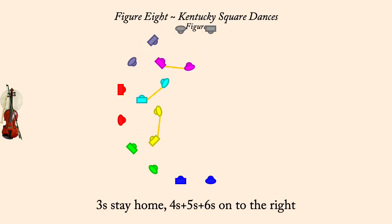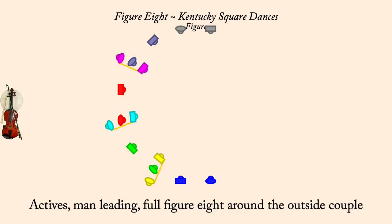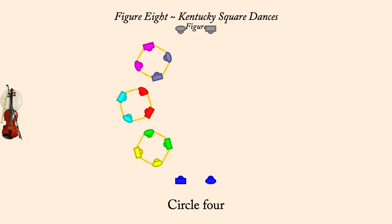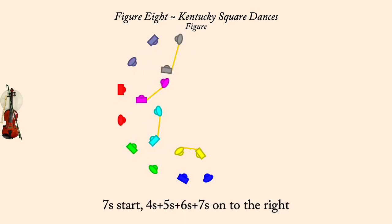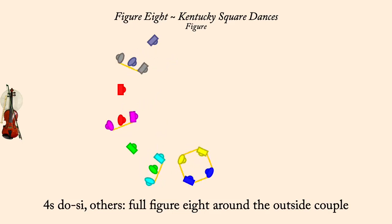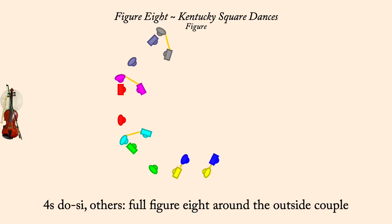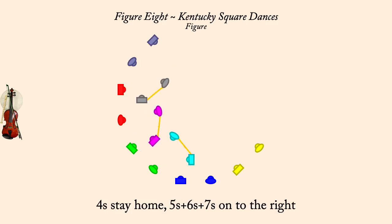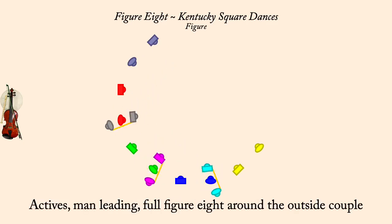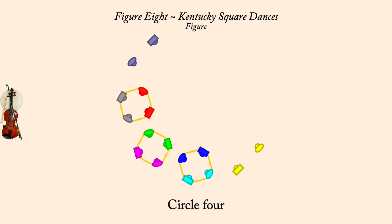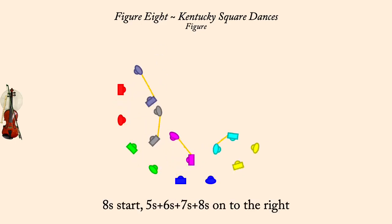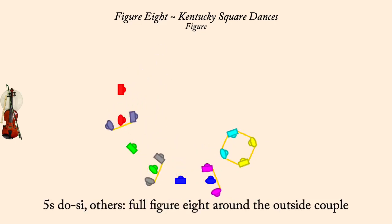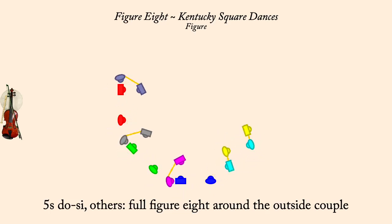On to the right, full figure eight around the outside couple. Circle left four. Next, on to the right, dough C or figure eight. Circle left four. On to the right, full figure eight around the outside couple. Circle left four. Next, on to the right, dough C or figure eight. Circle left four.